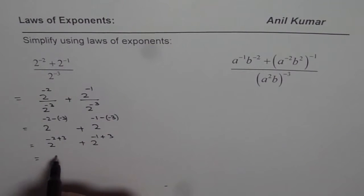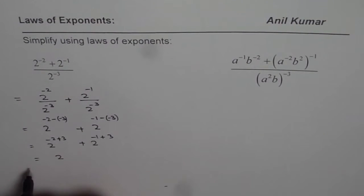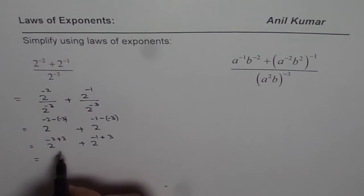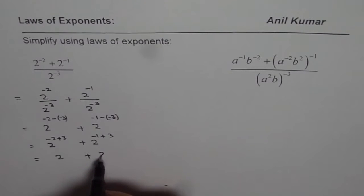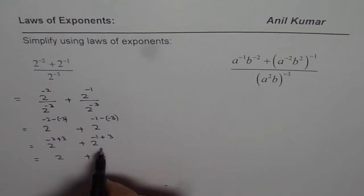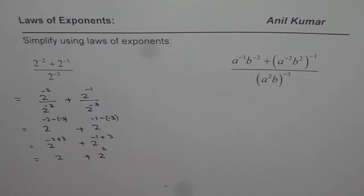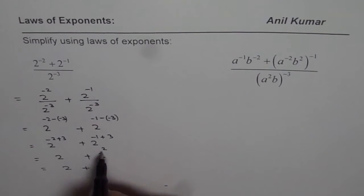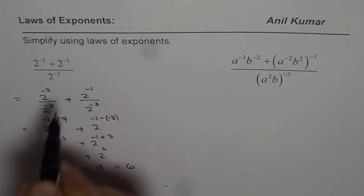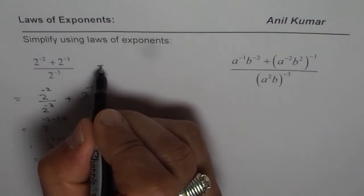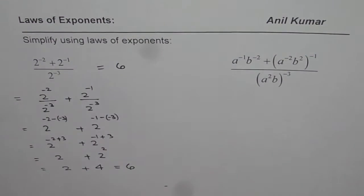That gives us 2 to the power of 1 — normally we don't write the exponent 1, so just 2 — plus 2 to the power of 2, which is 4. So 2 plus 4 equals 6, and the given expression evaluates to 6.